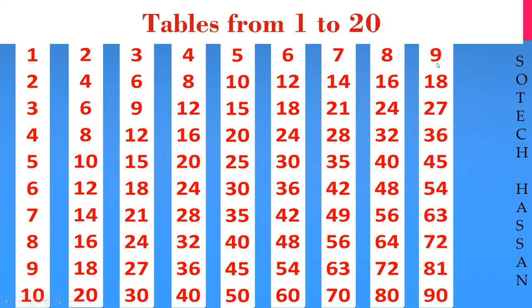9th table: 9 1s are 9, 9 2s are 18, 9 3s are 27, 9 4s are 36, 9 5s are 45, 9 6s are 54, 9 7s are 63.